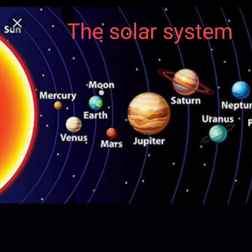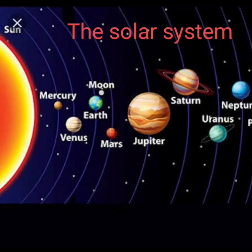The first four planets — Mercury, Venus, Earth and Mars — are small and rocky. The last four — Jupiter, Saturn, Uranus and Neptune — are very large but not rocky like the Earth. They are huge balls of gas, called gas giants. The planets do not all look the same. The Earth looks blue from space, Mars looks red, and Saturn has large rings around it. Jupiter is the largest planet and Mercury is the smallest. Our Earth is a very special planet because it is the only planet we know that has life, that is, living beings.